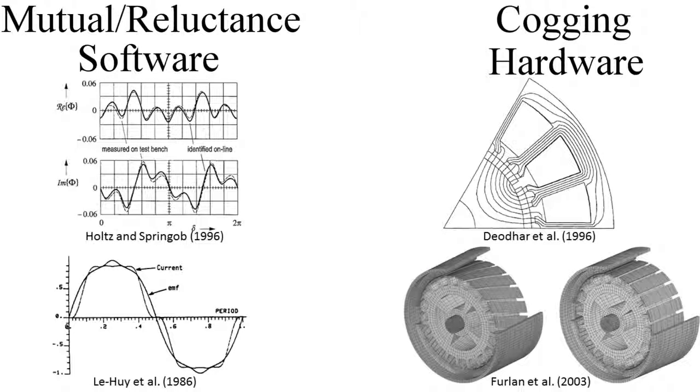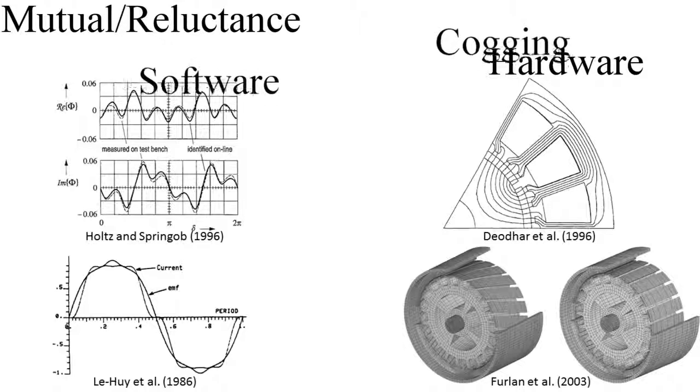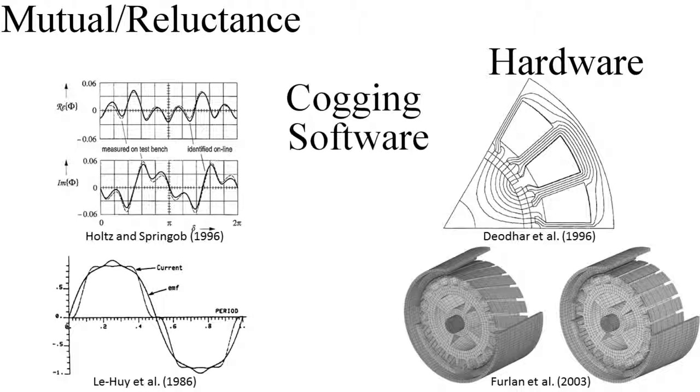Torque ripple has been heavily studied in the last 25 years, and most research falls under two categories: software methods for mutual and reluctance torque ripple minimization, and hardware redesign solutions for cogging torque ripple minimization. But can we combine these two philosophies to minimize cogging torque ripple with software?